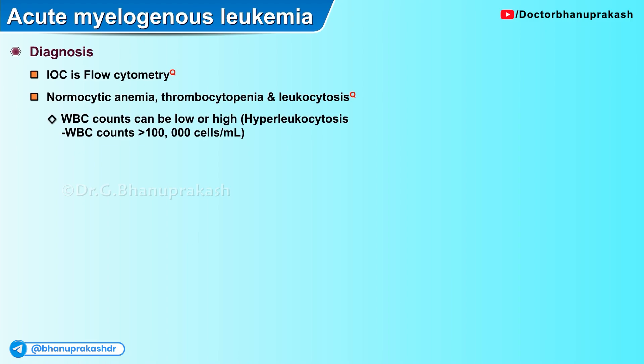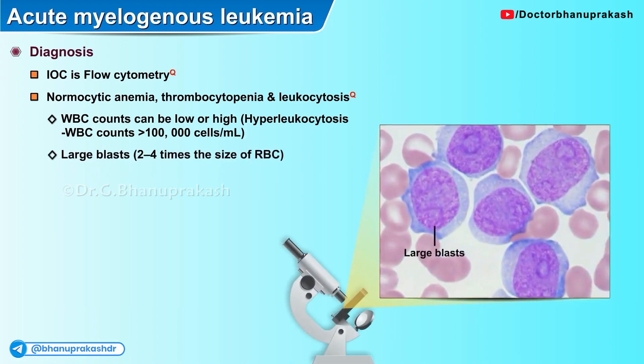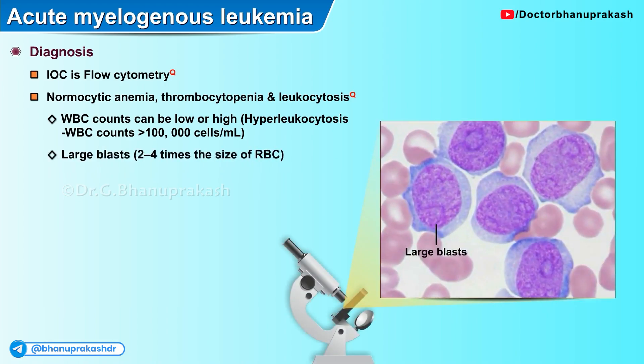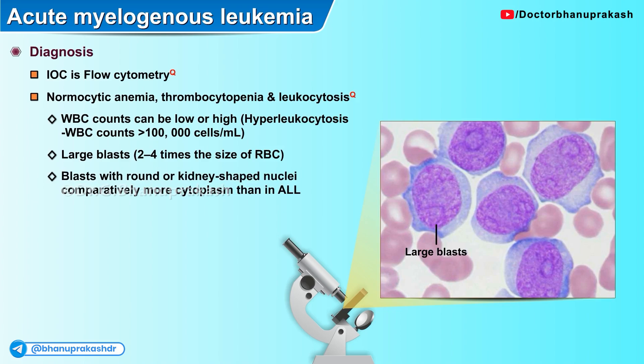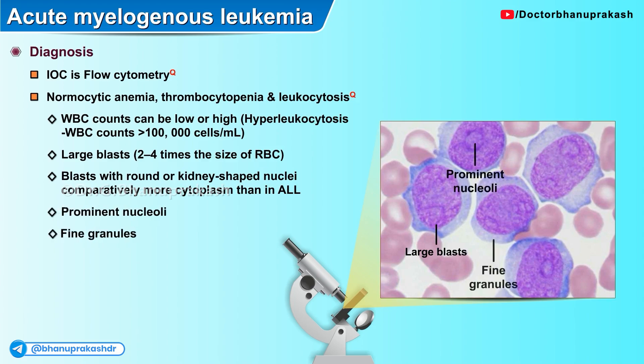Hyperleukocytosis may occur with white cell counts more than 100,000 cells per milliliter. A large percentage of blast cells, which are two to four times the size of an RBC, are usually appreciated on smear examination of the peripheral blood or bone marrow. Blast cells have round or kidney-shaped nuclei with comparatively more cytoplasm than in ALL, and prominent nucleoli along with fine granules are characteristic histological features.